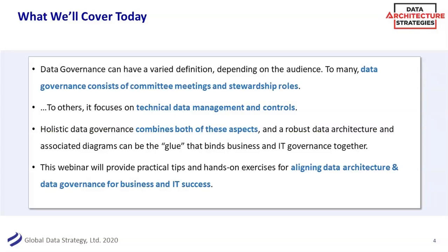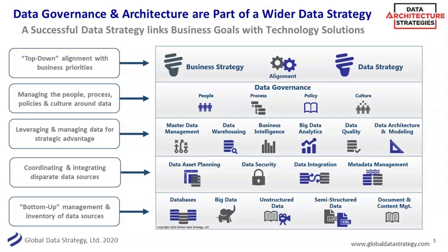Part of the complexity in doing data governance is a misunderstanding of what people are talking about. Some people talk about data governance at a very technical level — data architecture, naming standards, and business rules. Other people talk more about committees and data stewardship roles. And they're all right. That's what's complicated — it's not only one thing. When data governance sings and does well, both of those aspects can work in harmony. That is the topic of today.